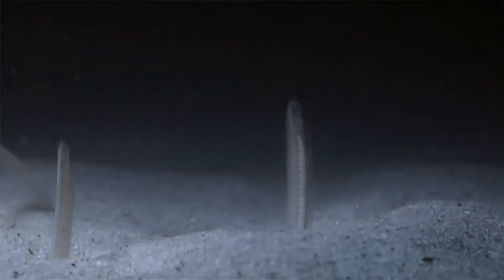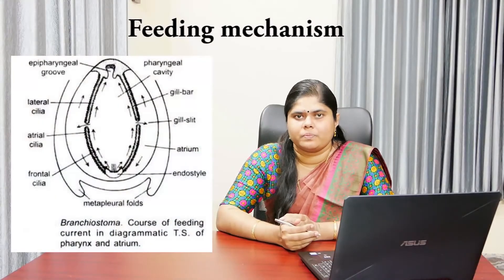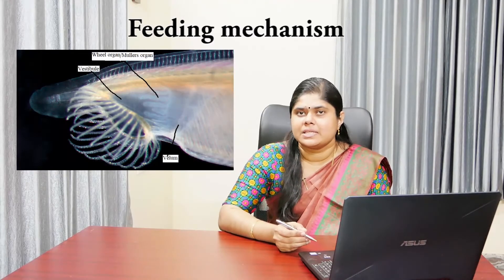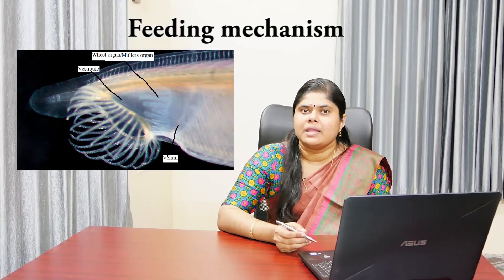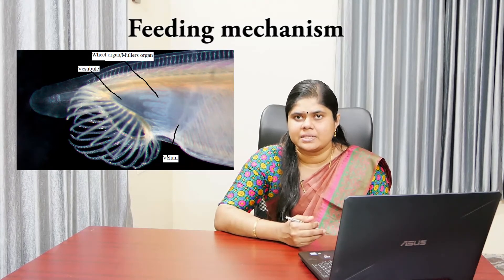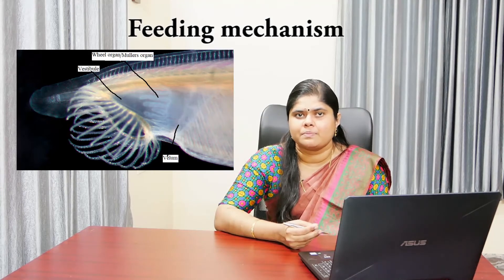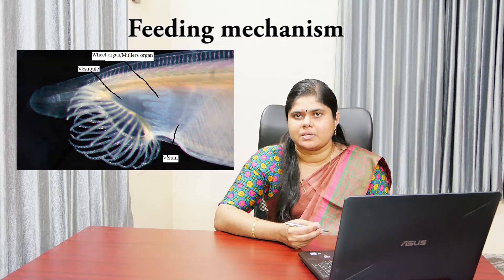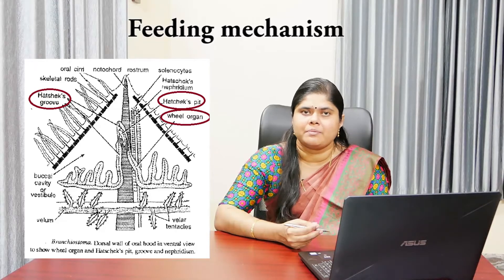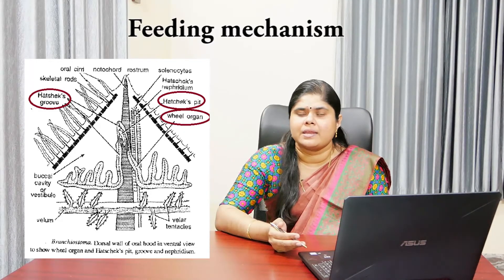Next is the feeding mechanism. Food particles are filtered from the current of water entering the pharynx through the mouth and finally going out through the atriopore. The rotatory movements of cilia of the wheel organ cause a whirling current of water into the mouth. The buccal cirrhae fringing the oral hood turn inward to form a fine mesh or sieve that prevents the entry of larger food and sand particles. While passing through the endostome, the water current is further filtered by the velum tentacles, so that only very fine food particles enter the pharynx. The chemoreceptors present on the buccal cirrhae and velum tentacles serve to test the nature of the water current and food particles. Food particles that escape the main current are caught and concentrated by mucus secreted by Hatschek's groove and pit in the oral hood. These food particles are pushed through the endostome into the pharynx by the fanning action of the wheel organ and join the main current.